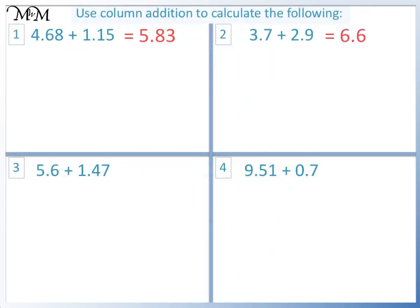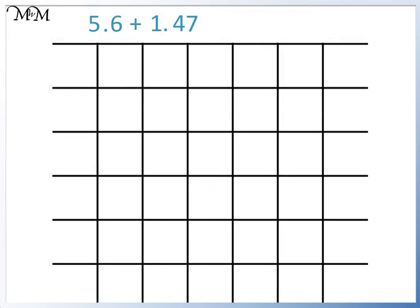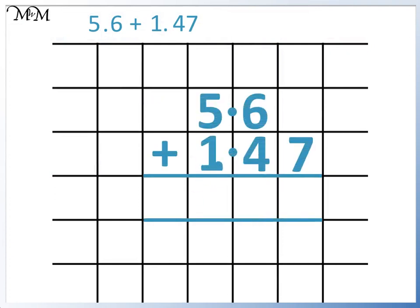Question 3: 5.6 plus 1.47. We begin by writing a zero in the hundredths column of 5.6. 0 plus 7 equals 7. 6 plus 4 equals 10. 5 plus 1 equals 6, plus 1 equals 7. The answer is 7.07.